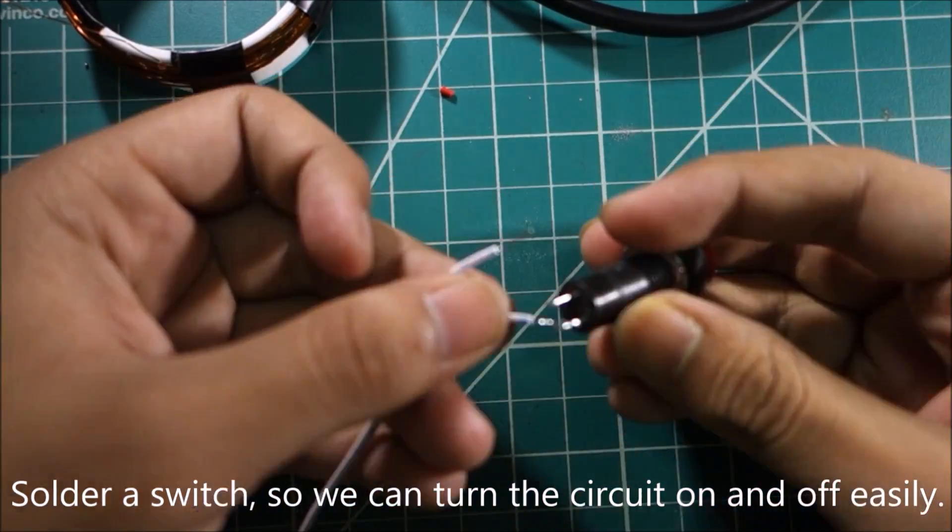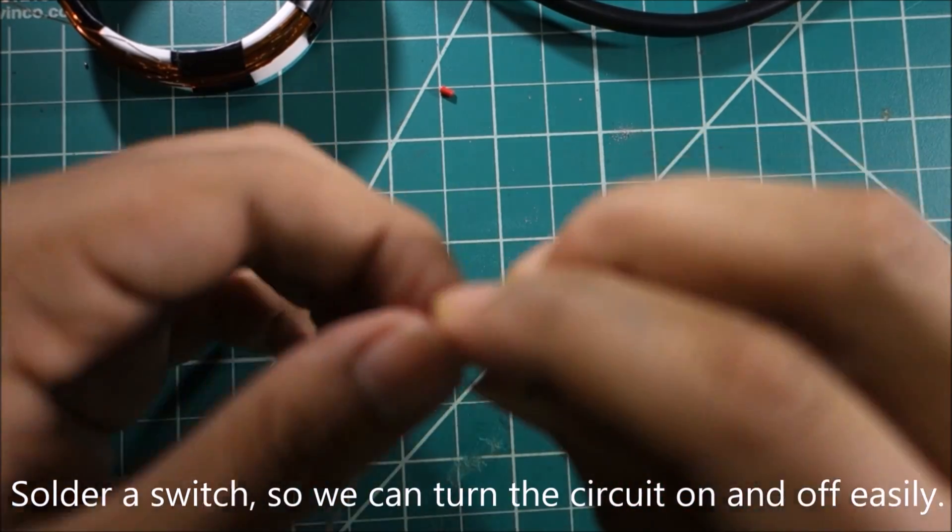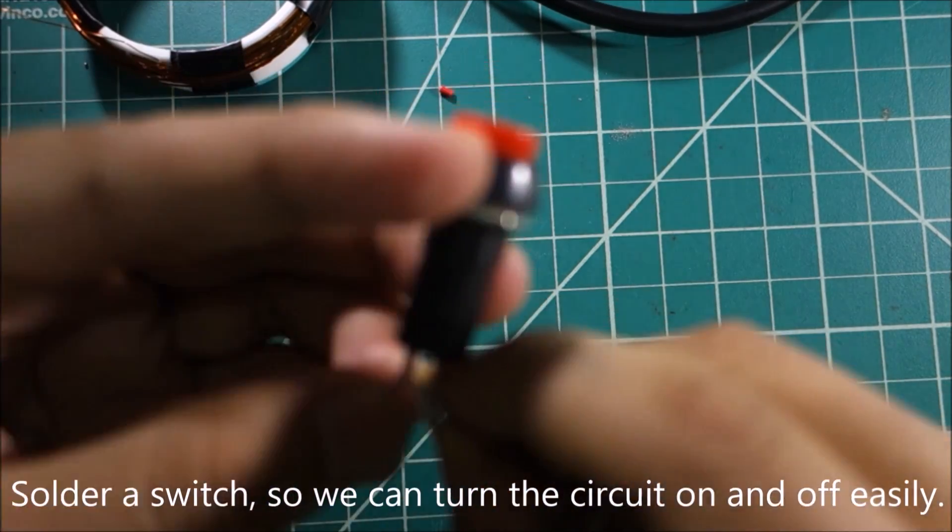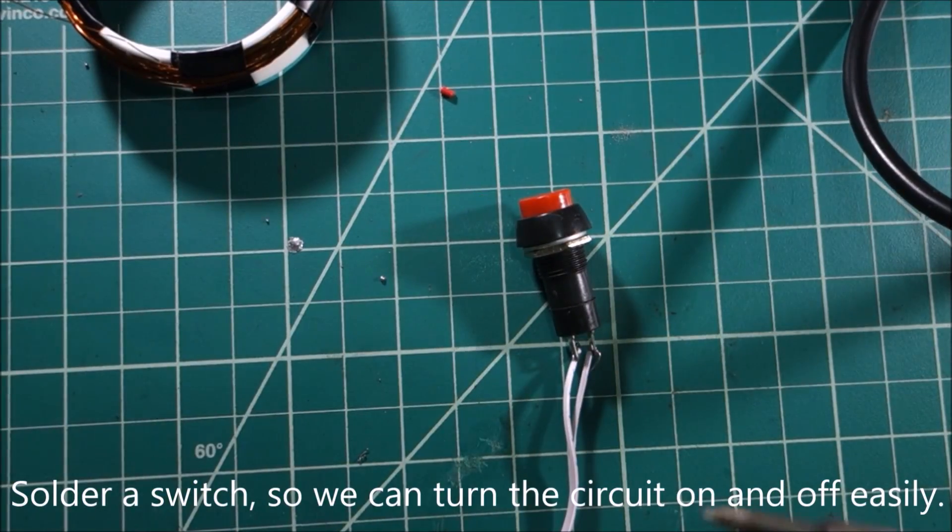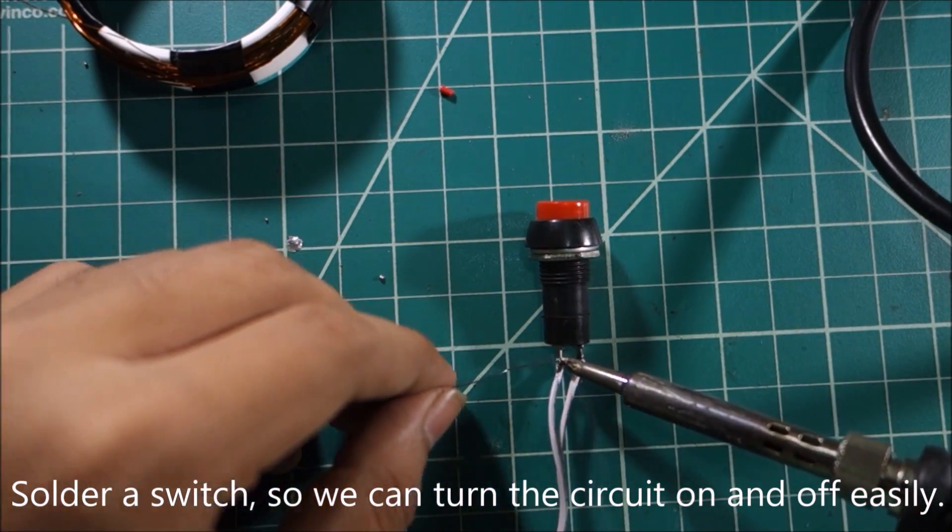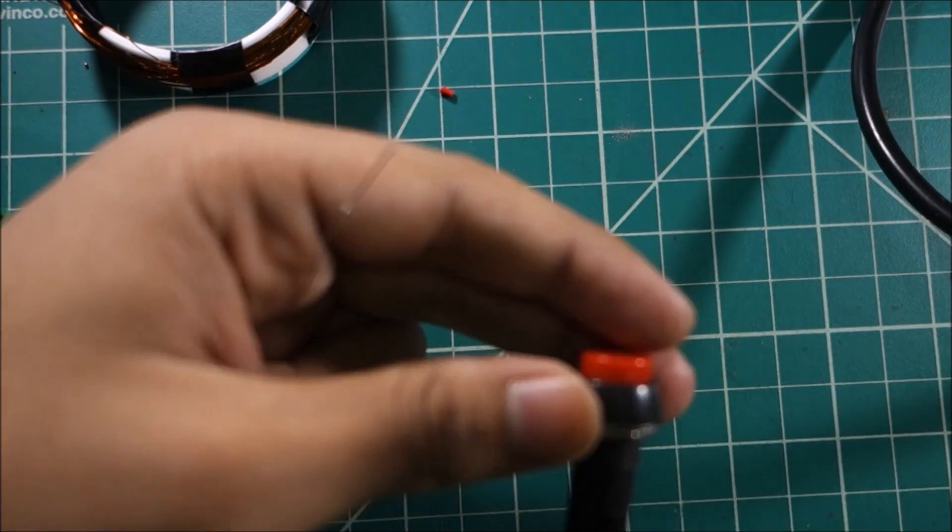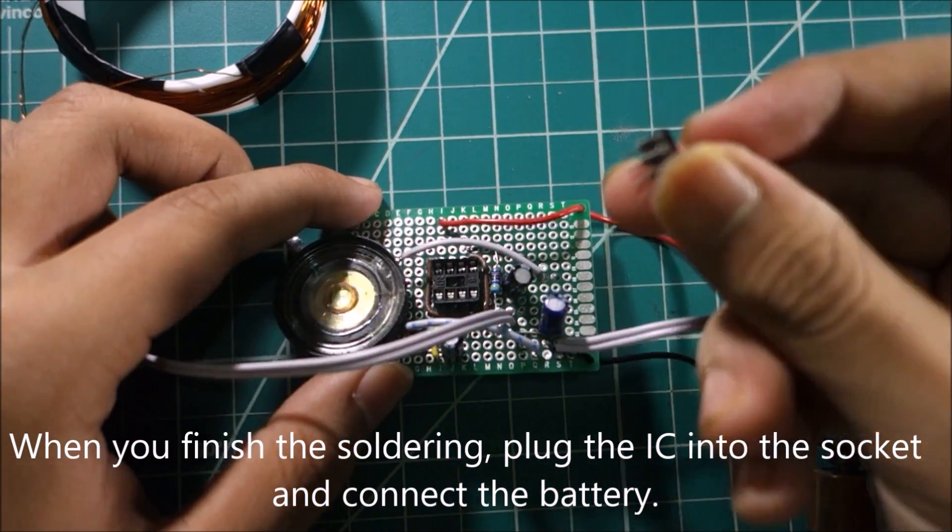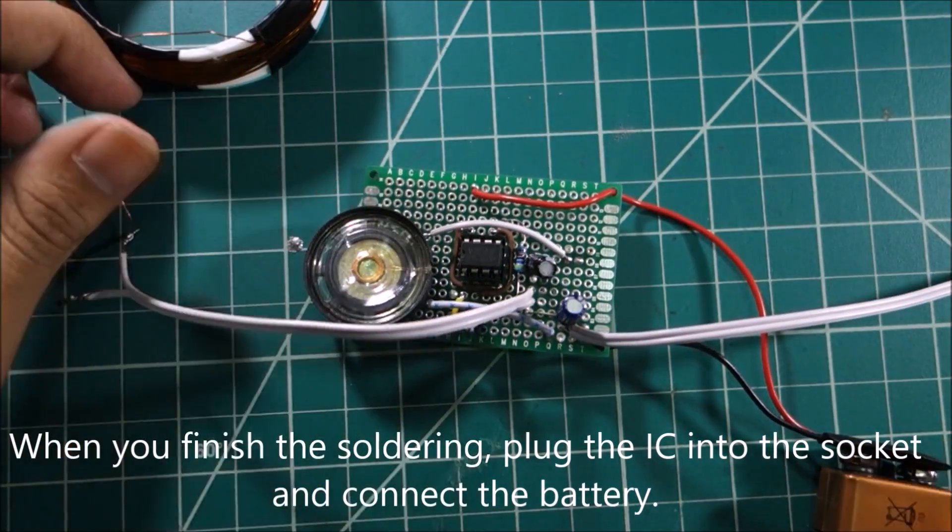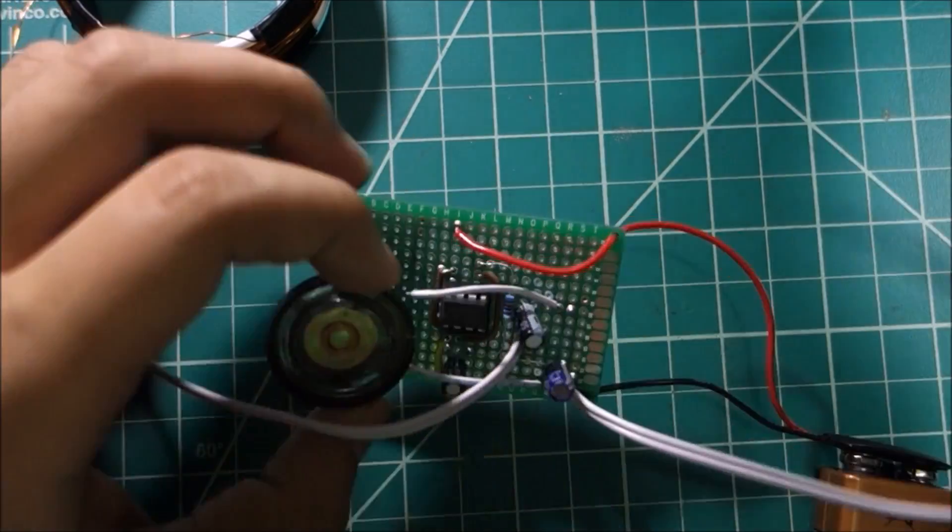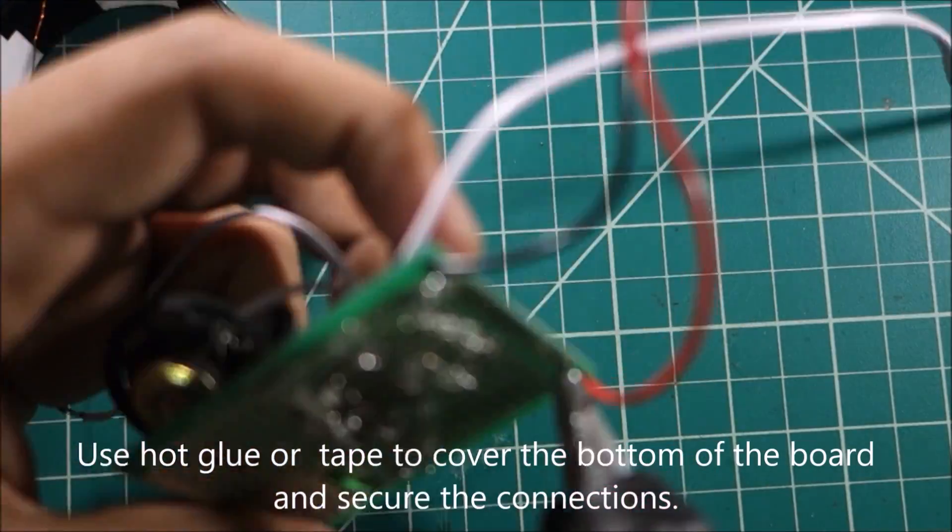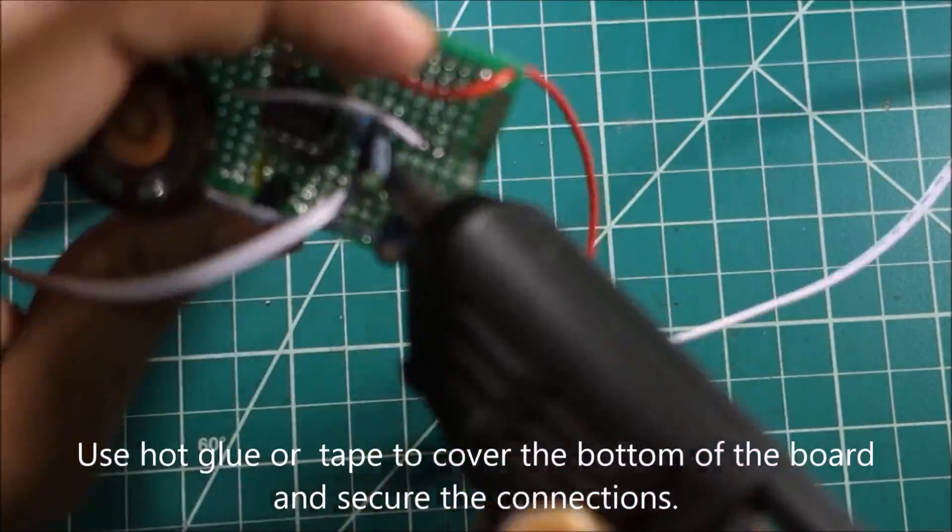Solder two wires to a switch and connect them to the board so that we could turn the circuit on and off easily. When you finish the soldering, plug the IC into the socket and connect the battery. Use hot glue or tape to cover the bottom of the board and secure the connections. You can also use hot glue to keep the components in place.